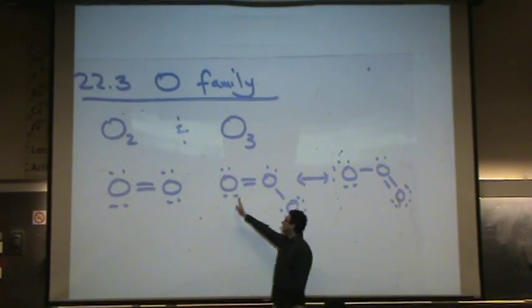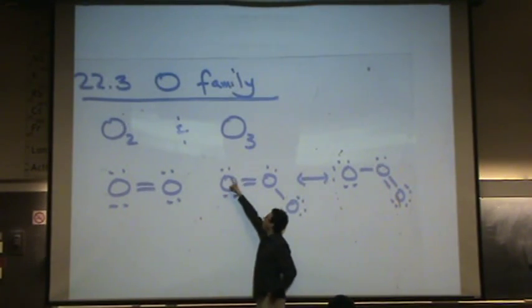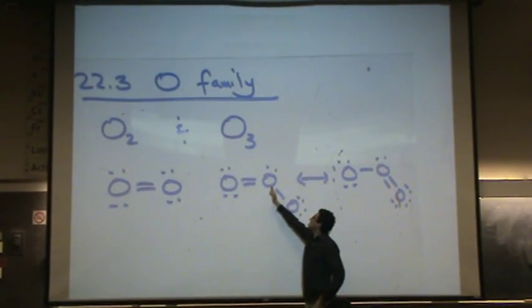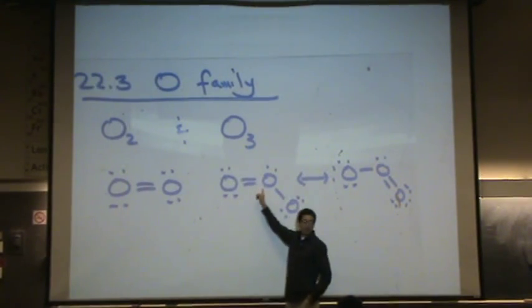What's the formal charge right here? It's in column six. Zero. One, two, three, four, five, six. How about this one? Plus one. One, two, three, four, five. That'd be plus one.